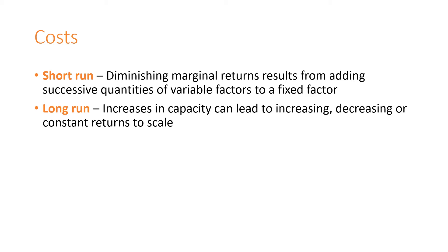Costs also differ in the long and short run production function of the firm due to diminishing marginal returns. Diminishing marginal returns in the short run result from adding successive quantities of variable factors to a fixed factor. In the long run, increases in capacity can lead to increasing, decreasing, or constant returns to scale of production.